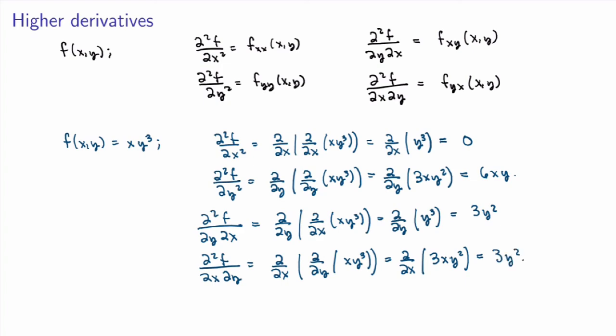The two mixed partial derivatives are exactly equal in this example, and this is not a coincidence. For most functions of interest, the mixed partial derivatives will be equal. The formal statement is Clairaut's theorem, which says that for any function whose second-order partial derivatives are continuous, it will always be true that the mixed partial derivatives are equal — it does not matter whether you first differentiate with respect to x and then y, or the other way around.